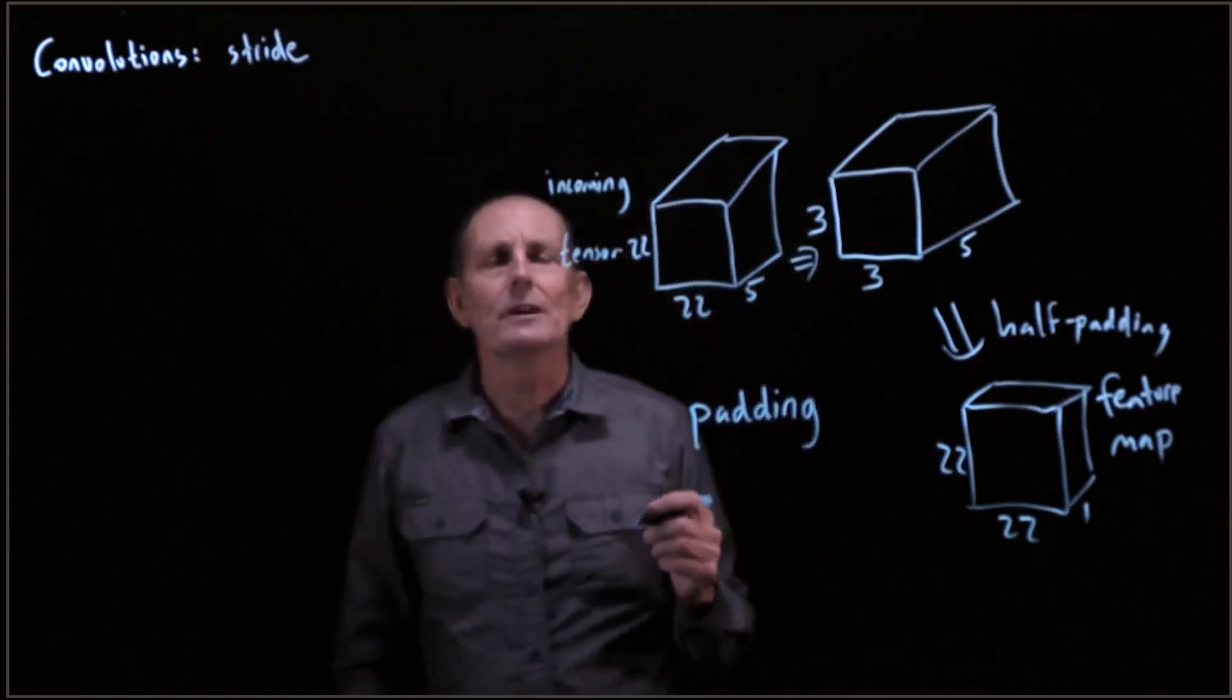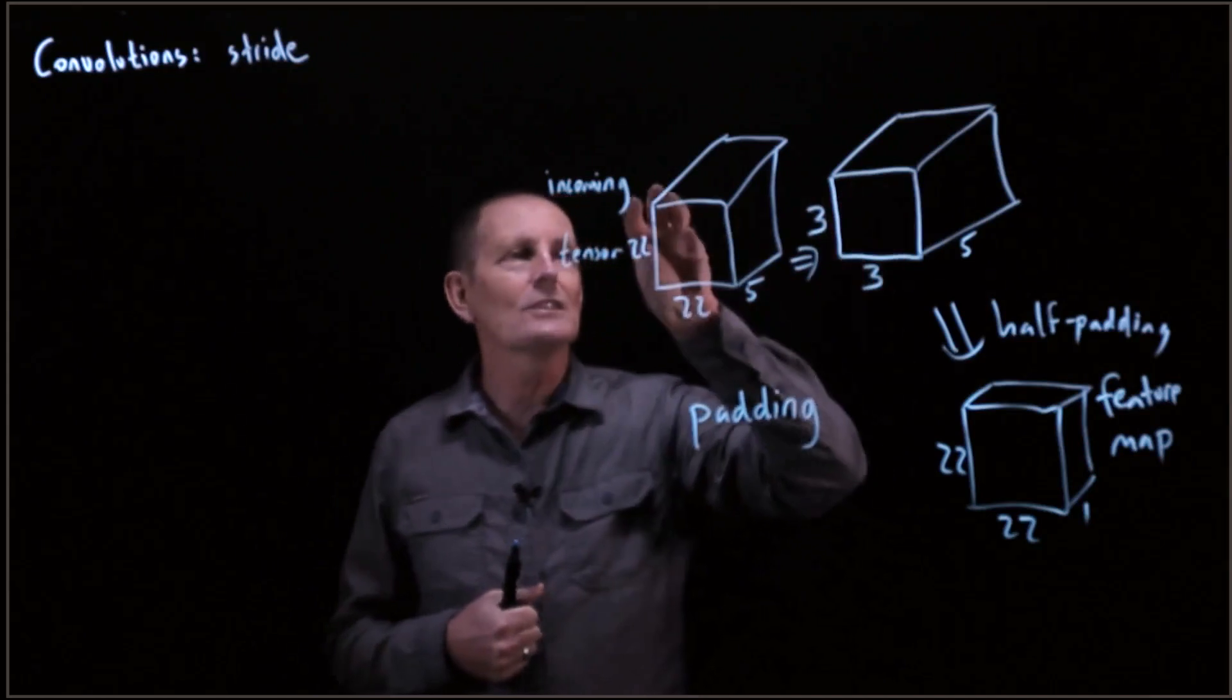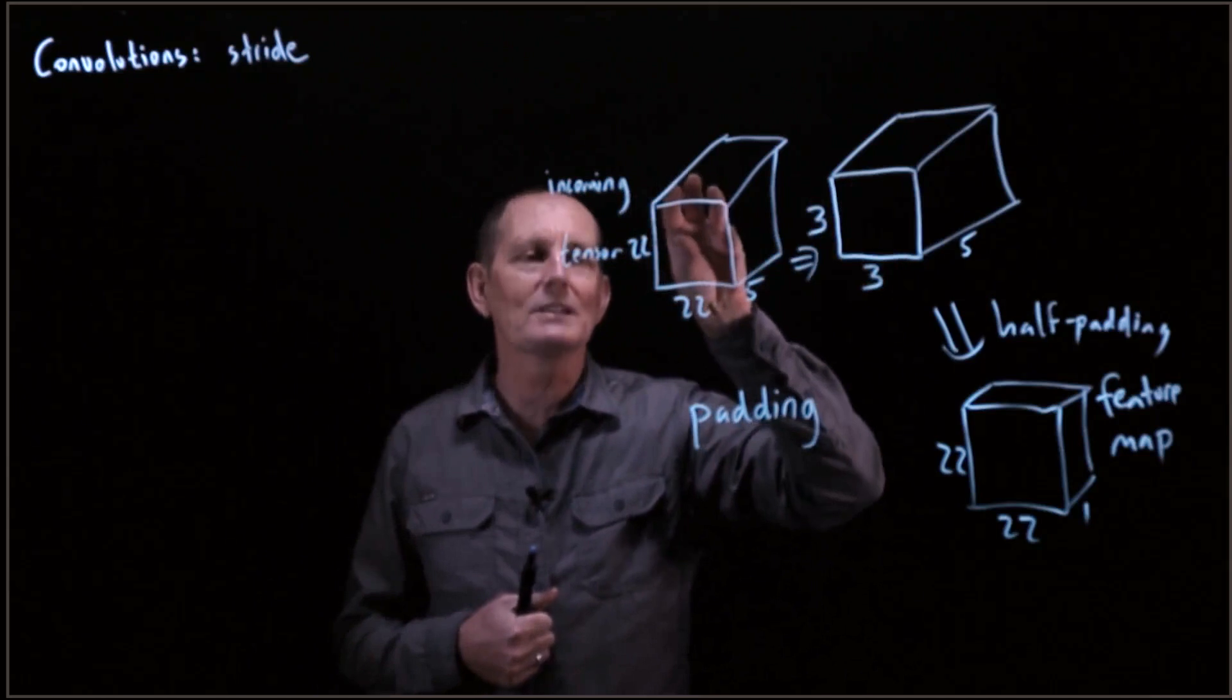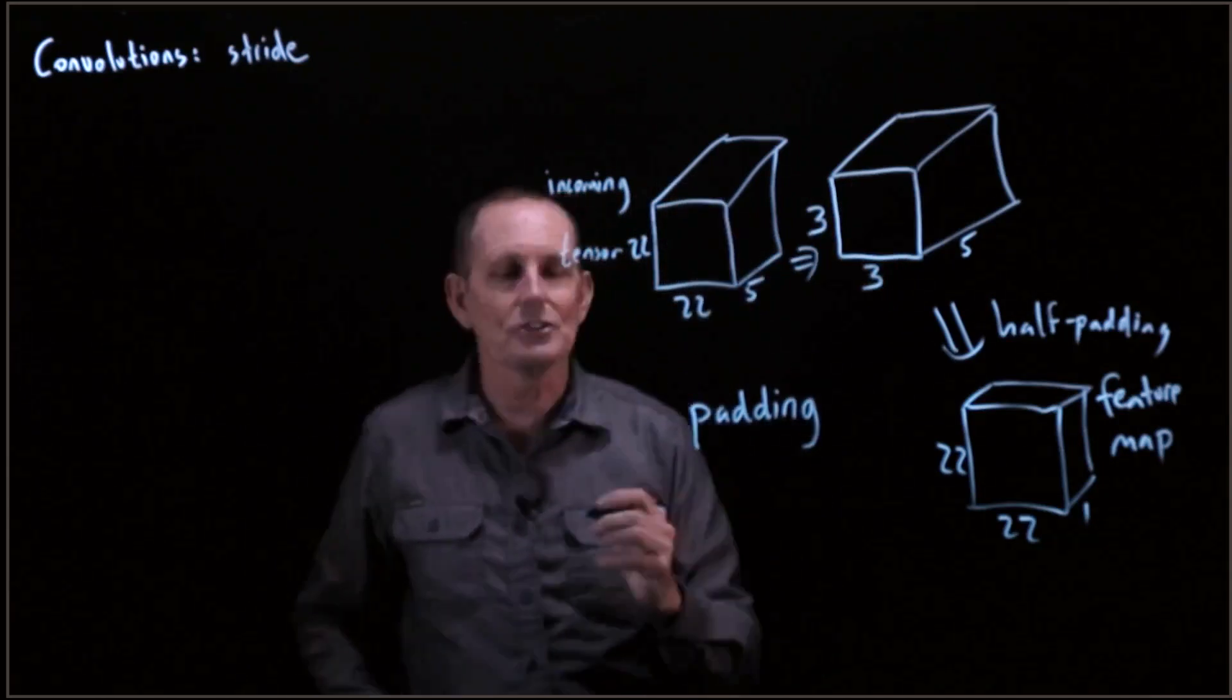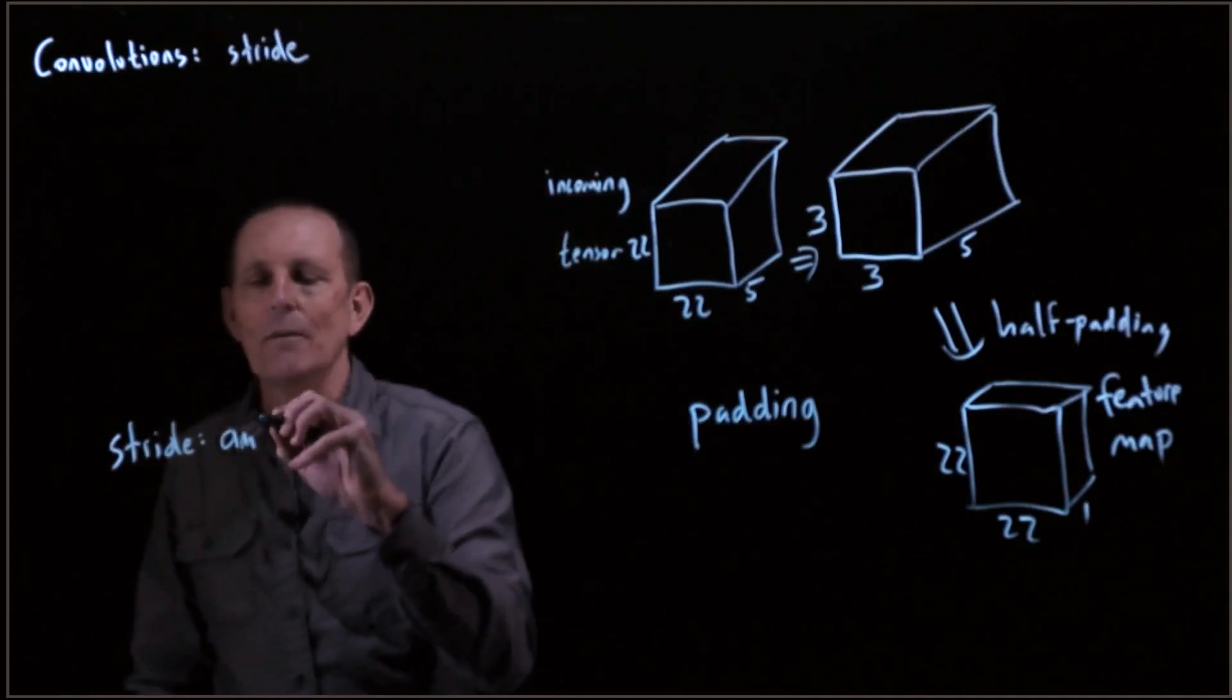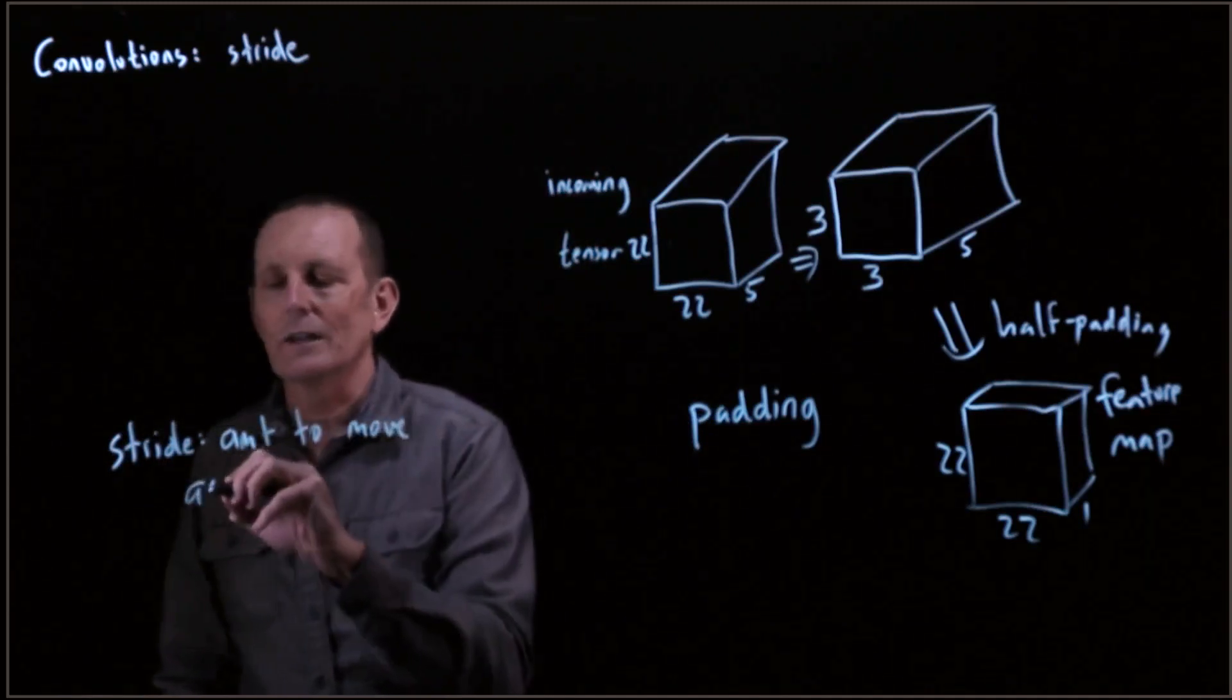One of the assumptions we made, though, is that we were taking this 3 by 3 matrix, centering on the top left pixel, and then moving it over one pixel, moving it over one pixel, moving it over one pixel, and so on. That is called the stride. The stride is the amount to move as you're applying convolutions.